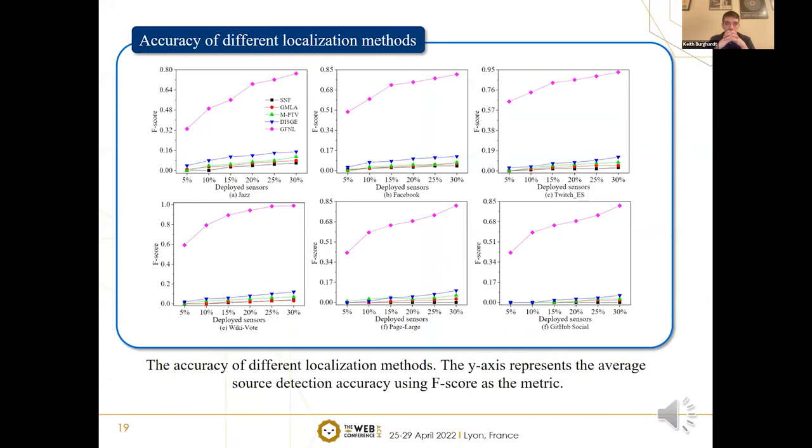This figure demonstrates the detection accuracy of six groups of deployment ratios. Under the low infection rate, GFNL at least outperforms the optimal baseline DSGE by 121%.